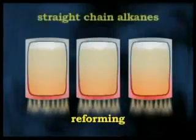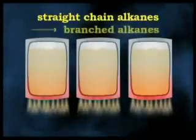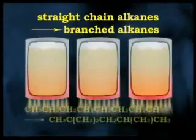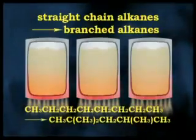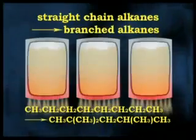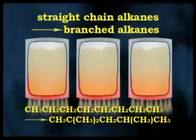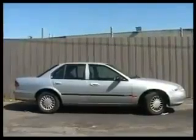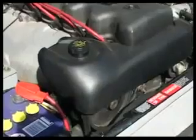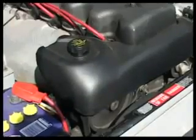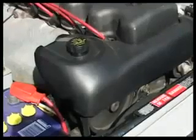Reforming involves the breaking of straight chain alkanes into branched alkanes. The branched chain alkanes in the 6 to 10 carbon atom range are preferred as car fuel. These alkanes vaporise easily in the engine's combustion chamber without forming droplets, and are less prone to premature ignition, which affects the engine's operation.